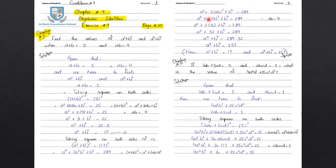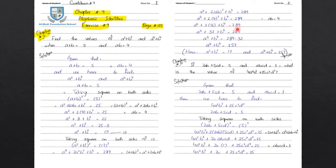Next, a raised to power 4 plus 2a square b square plus b raised to power 4 equals 289. We combine 2a square b square as 2 times (ab) square. Substituting ab equals 4, we get 2 times 4 square, which is 2 times 16, equal to 32.